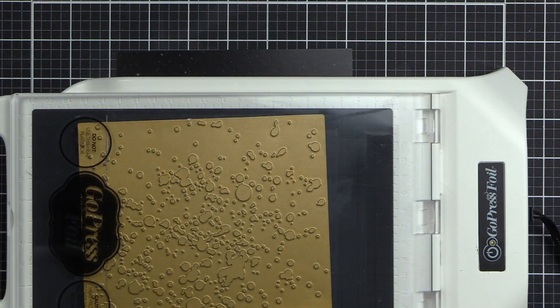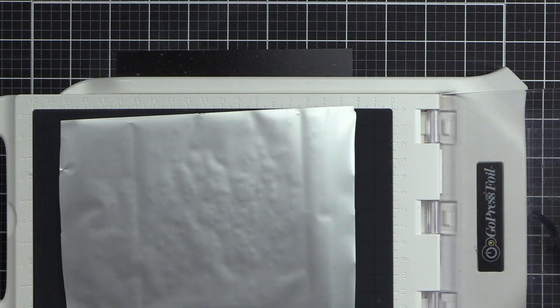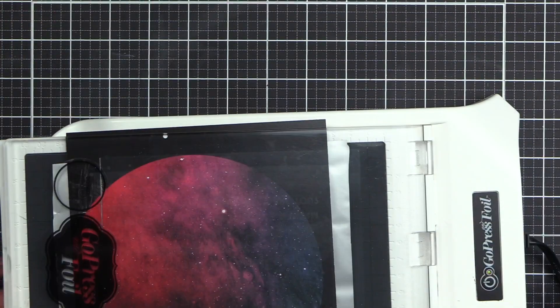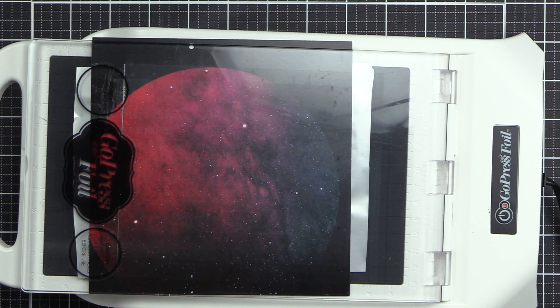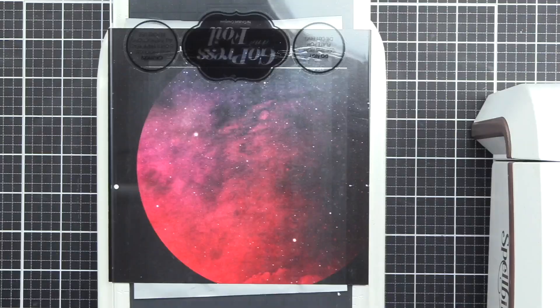We're also going to start with the Splatter Hot Foil Plate. I've got that in my GoPress foil machine, and it's already warmed up, so I can put my silver Spellbinders foil on there, and then put my cardstock on top of it. I'm going to let it sit there for just a minute so that it impresses the hot foil on there.